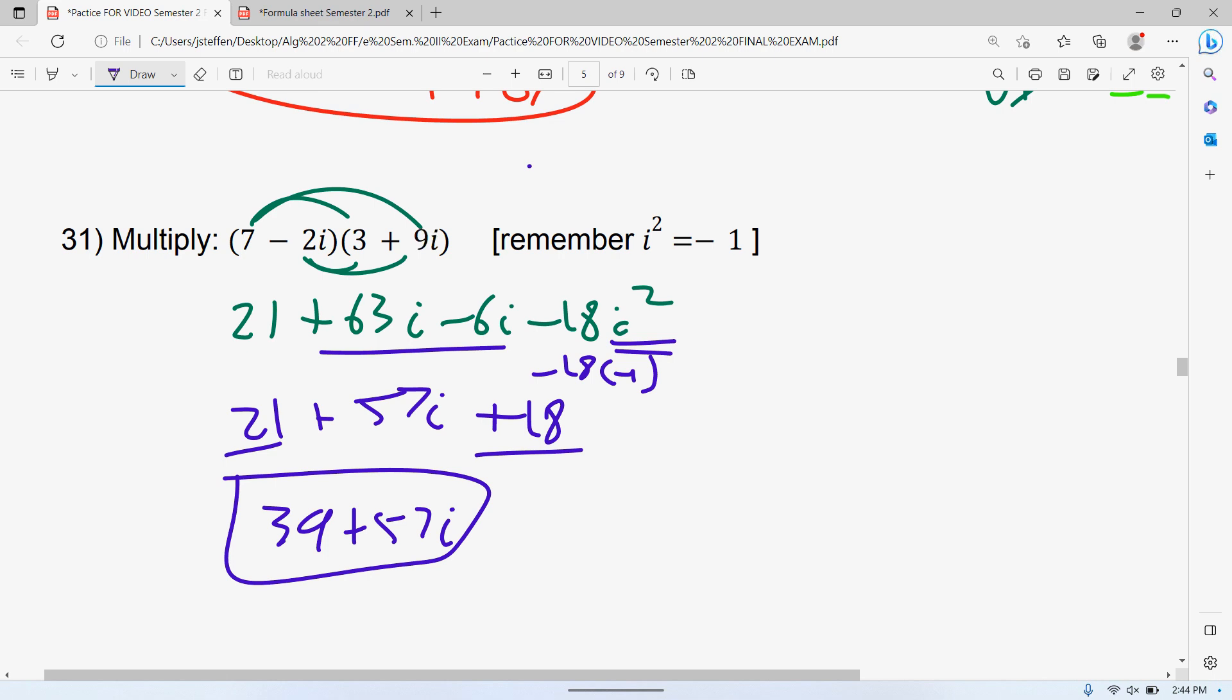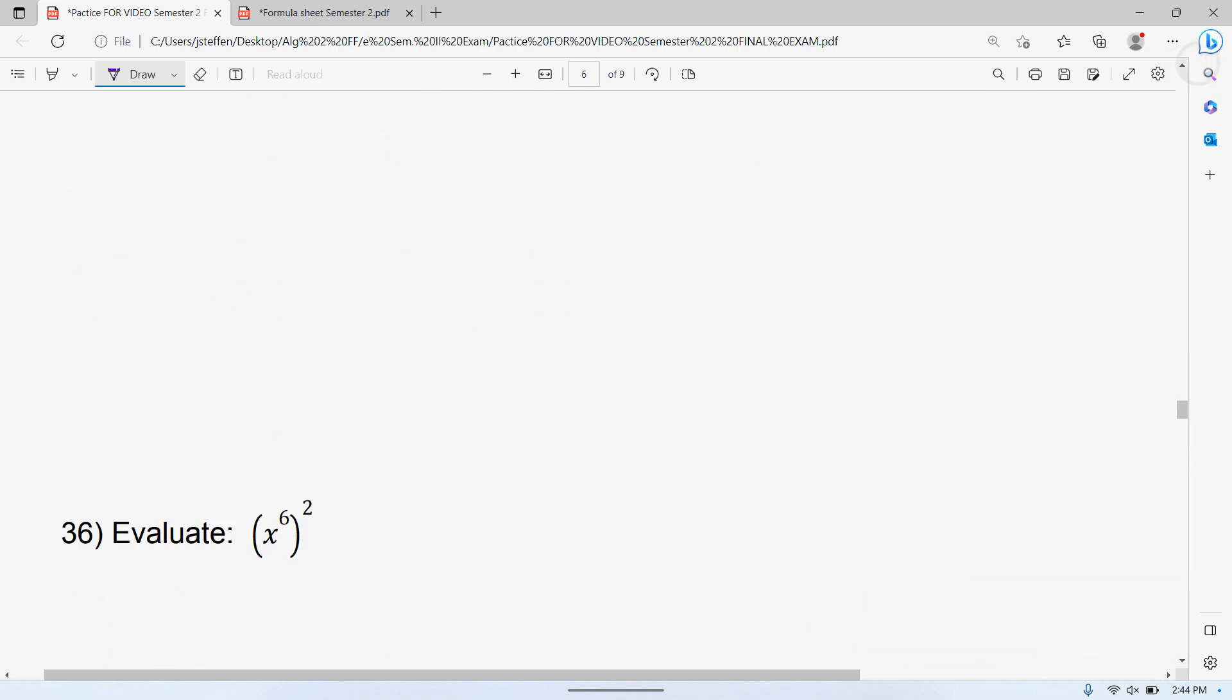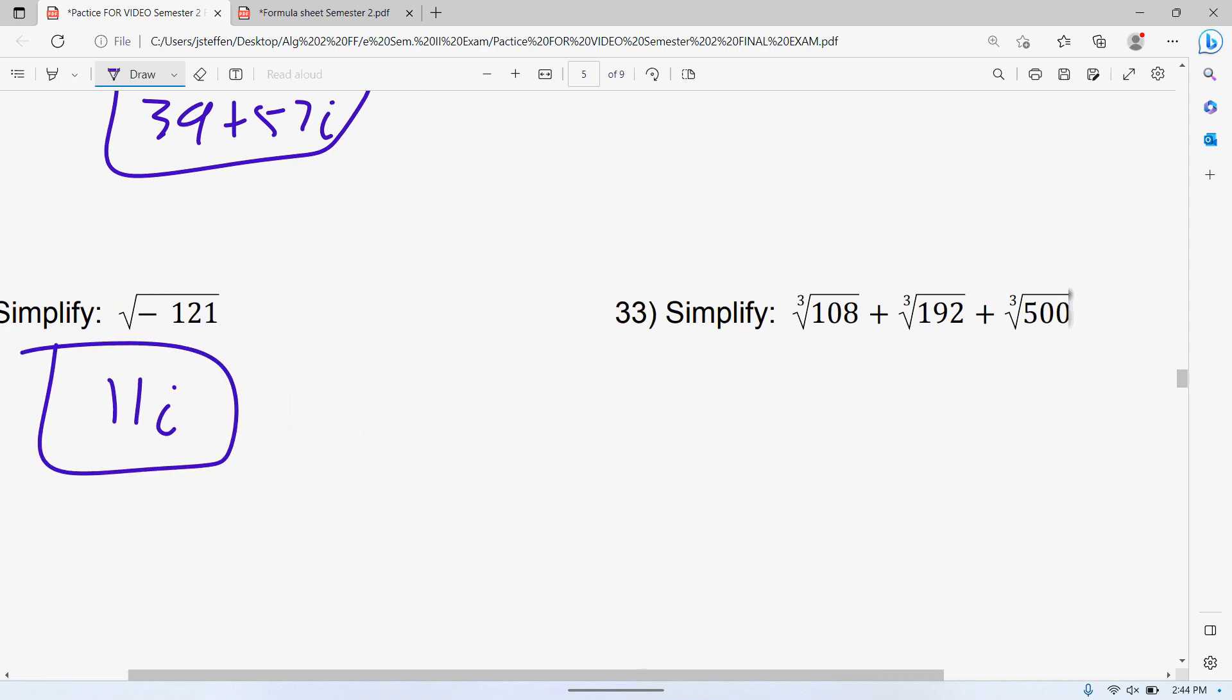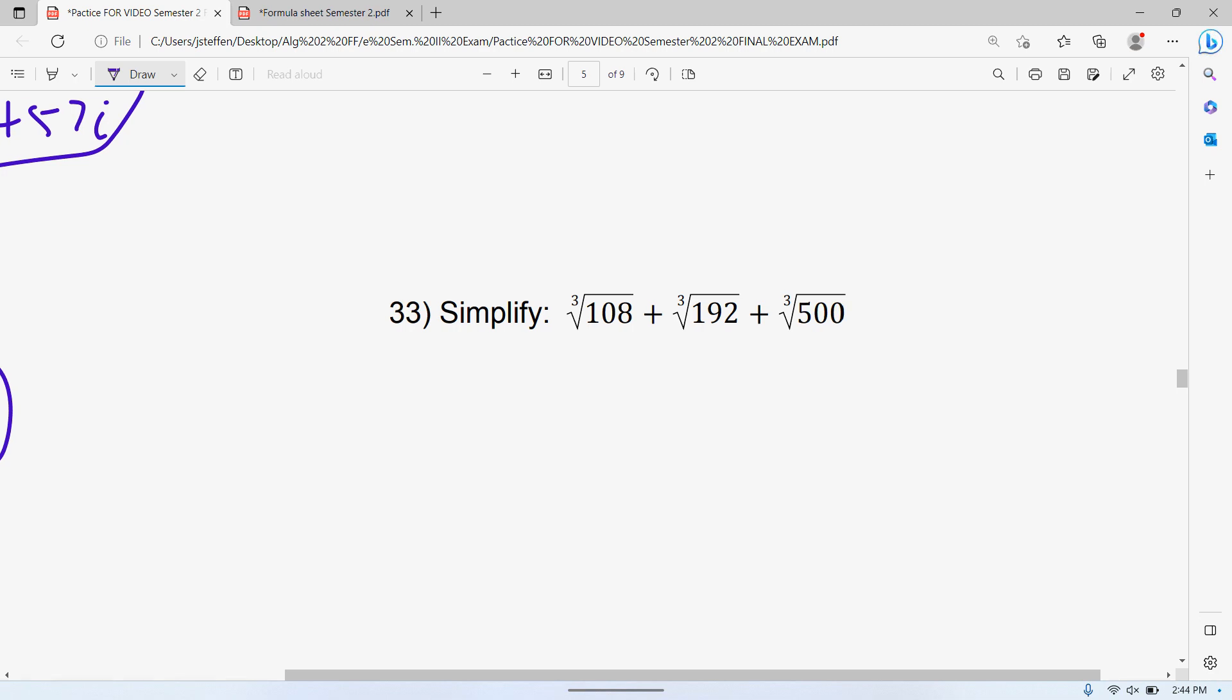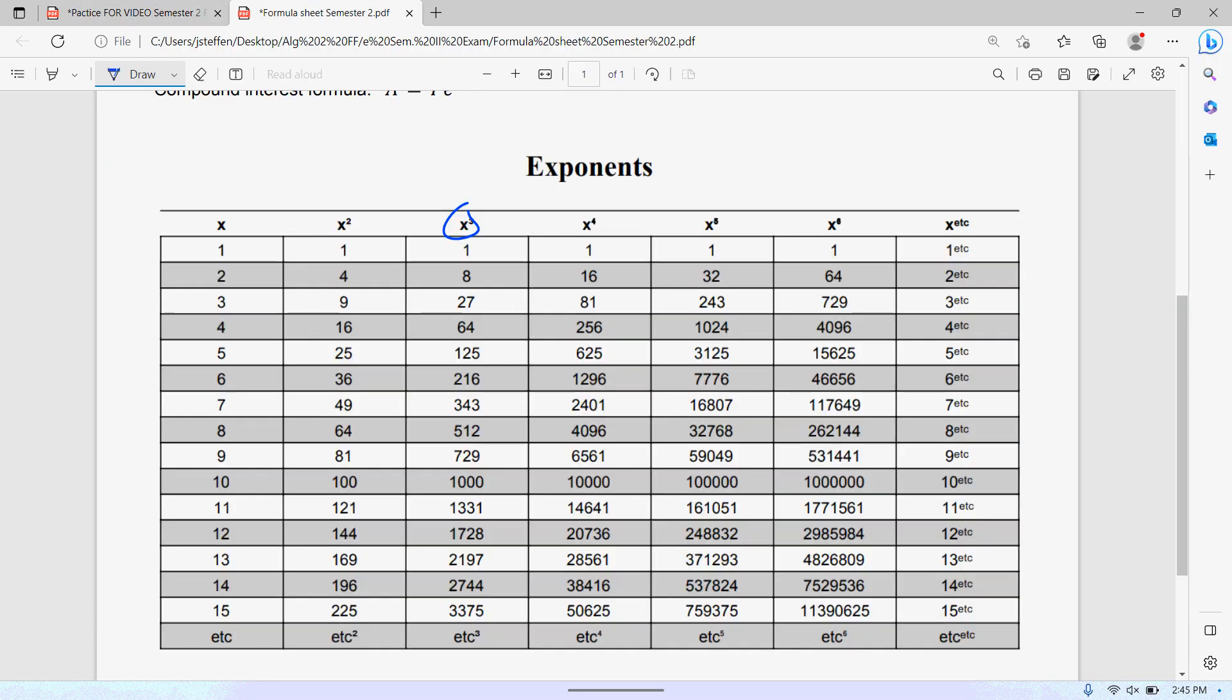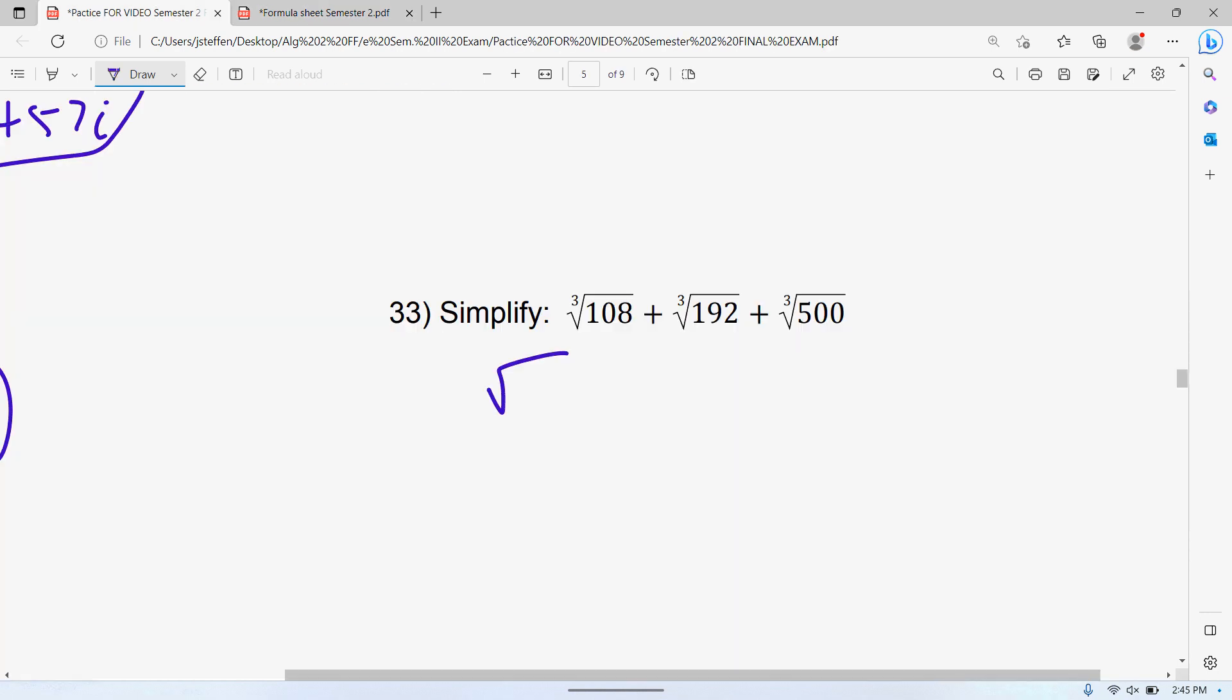The next one, 33, definitely use your exponent list. So we're trying to simplify each one of these. In our exponent list, we are going to use the third column. So 108, remember we're going to go along that list. 108 divided by 125 is too big. 64 doesn't work. 108 divided by 27 works. So 108 divided by 27 is 4. So it's the third root of 27 times the third root of 4. Third root of 27 from your list is 3.